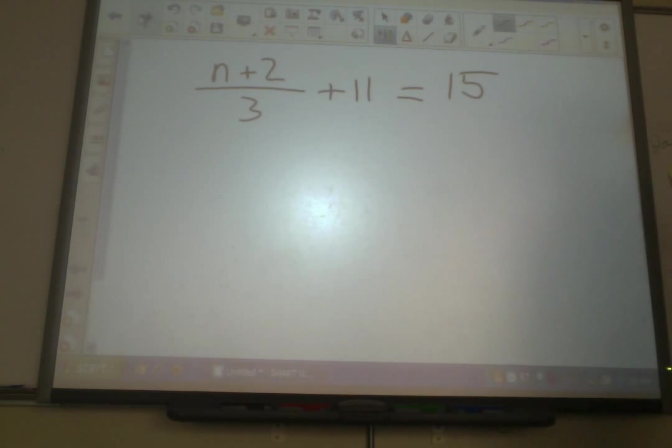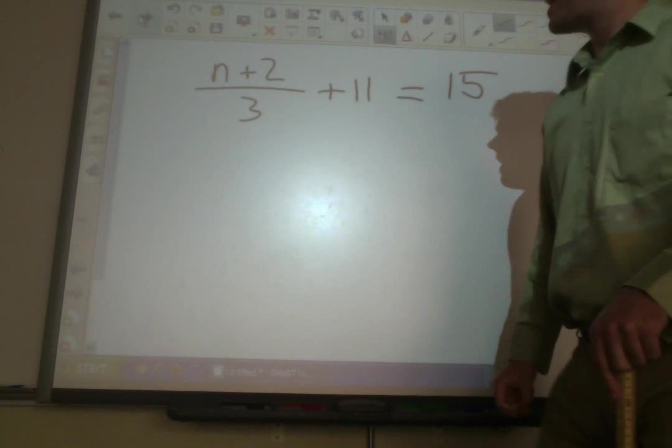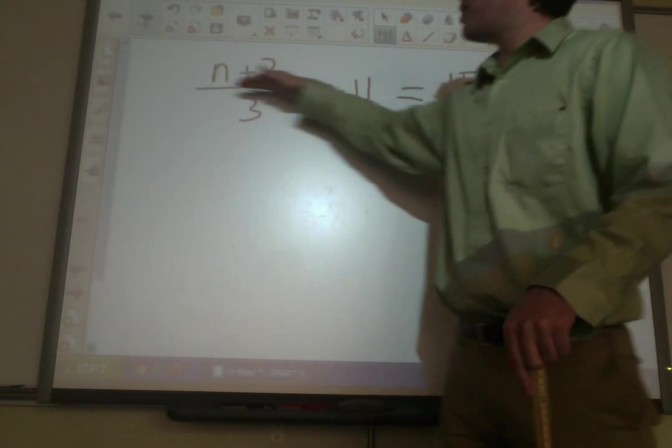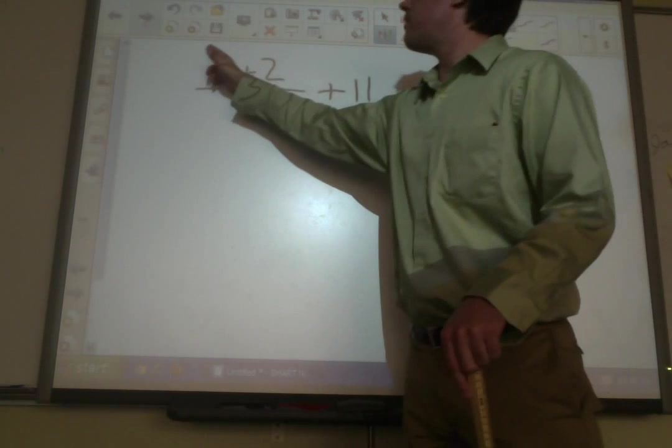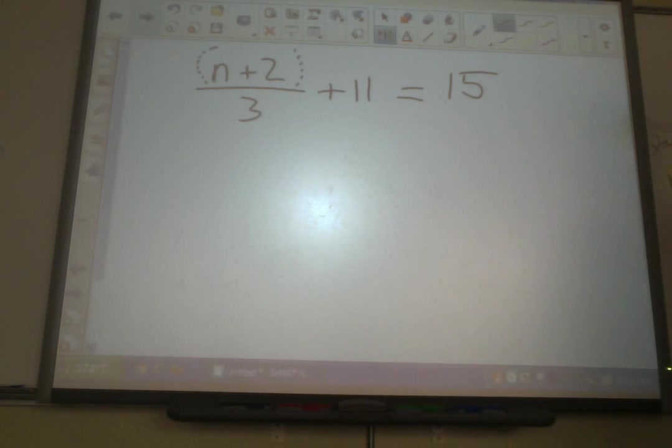Let's look at another one. n plus 2 over 3 plus 11 equals 15. Now, hold on a second. You're saying, I know what you're saying. You're saying, Mr. Reed, there are no parentheses up here. There's no grouping symbols. Well, hold on a second. Remember when we learned how to do this way back in 6th grade? We said that, basically, it's kind of as if anytime you have things separated by this fraction bar, it's as if you have invisible parentheses around them. So, even though we don't actually see parentheses there, we treat it as if there are parentheses around that stuff that's on top.